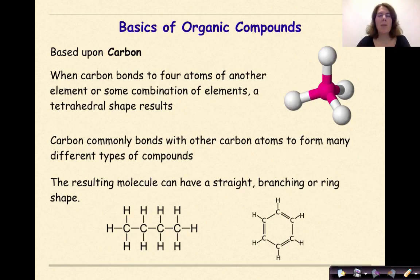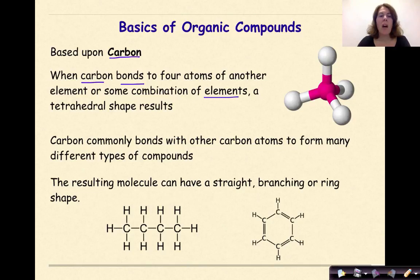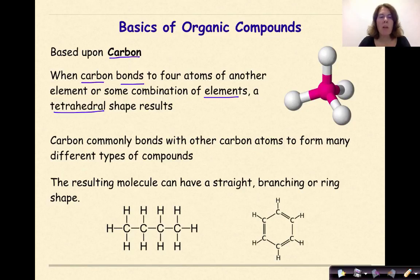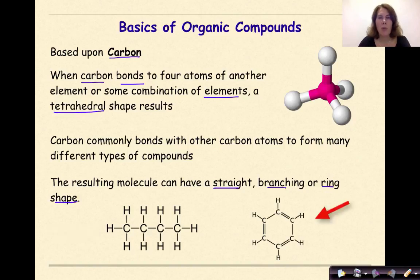Let's start off by talking about the basics of organic compounds. Organic chemistry is based upon the element carbon. When carbon bonds to four atoms of another element, or some combination of elements, a tetrahedral shape results, as you can see in the image on my screen. Carbon commonly bonds with other carbon atoms to form many different types of compounds. The resulting molecules can have a straight, branching, or ring shape associated with them, as you can see in the diagram — a straight-chained hydrocarbon, or a structure in the form of a ring.